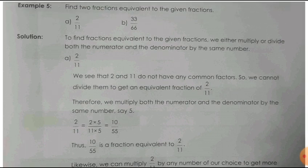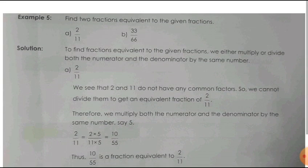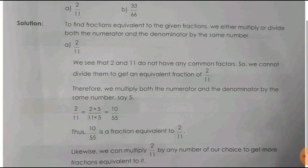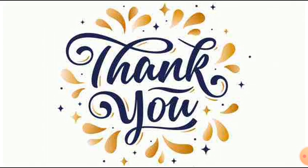There is one more question: 33 by 66. Children, if a bigger number is given and you can divide with a common number, then you can divide to get the equivalent fraction. So these are all for today. Today we learned what equivalent fractions are and how to obtain equivalent fractions for a given fraction. The fractions which show the same part of a whole are called equivalent fractions. To get the equivalent fraction of a given fraction, you can multiply or divide both numerator and denominator by the same number. Keep this in mind, study well, and do the notebook work. Thank you.